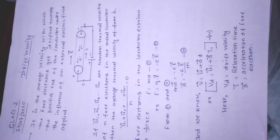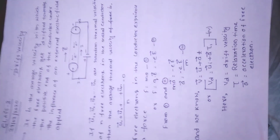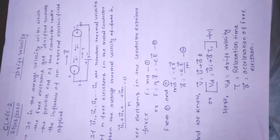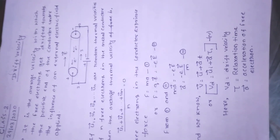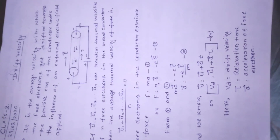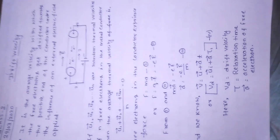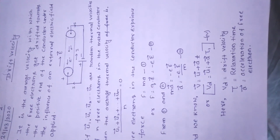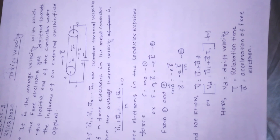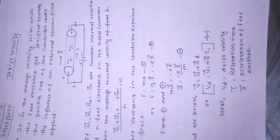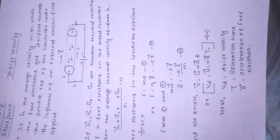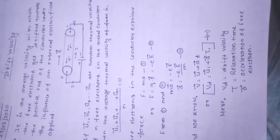इसको एक analogy से समझते हैं। मान लीजिए हम घर से class करने के लिए निकले। रास्ते में friends मिले जिन्होंने पूछा कहाँ जा रहे हो — इस वजह से हमारी velocity थोड़ी कम हो गई। आगे फिर कोई friend मिला, velocity फिर घटी। इस तरह जगह-जगह रुकने के कारण जो average velocity मिली, वही हमारी drift velocity है। और जो रुकने का time था, वह relaxation time कहलाता है।